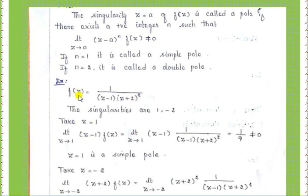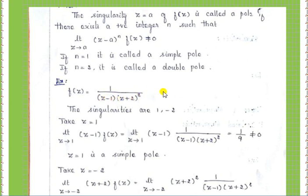Consider the example f of z equal to 1 by z minus 1 into z plus 2 the whole square. The singular points are found by identifying values of z that make the denominator zero. Replacing z equal to 1 gives 1 minus 1 equal to 0, so the denominator becomes zero. Replacing z equal to minus 2 also makes the total denominator zero. Therefore the singular points are z equal to 1 and z equal to minus 2.